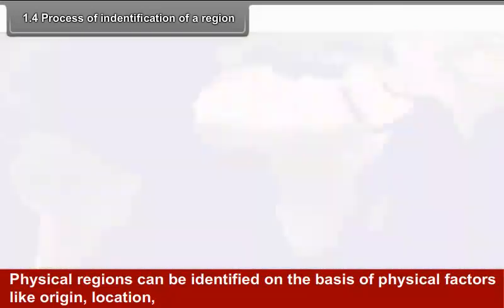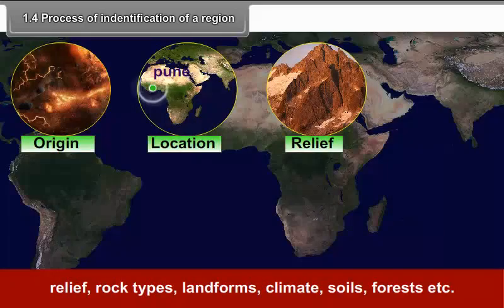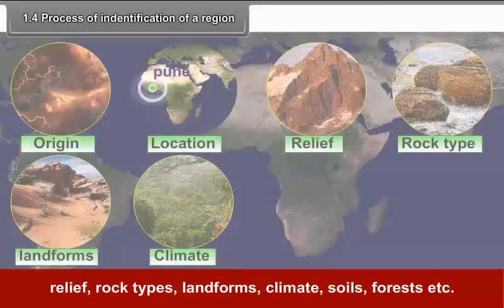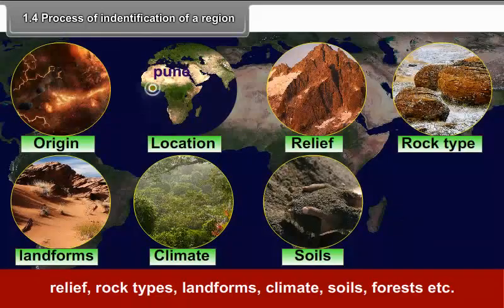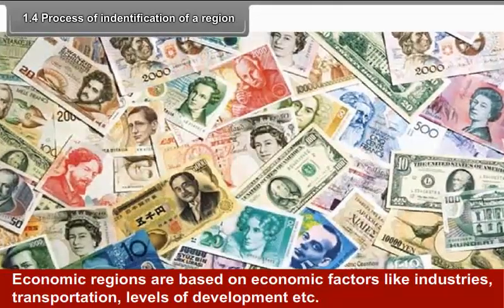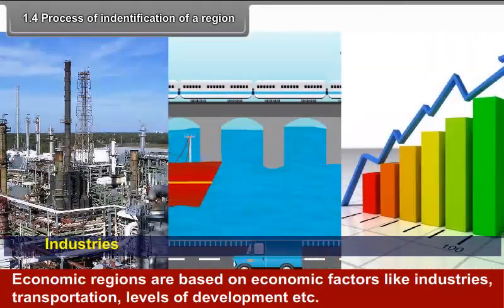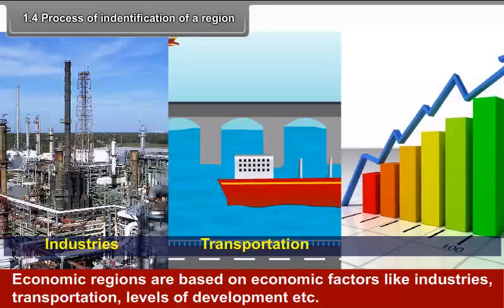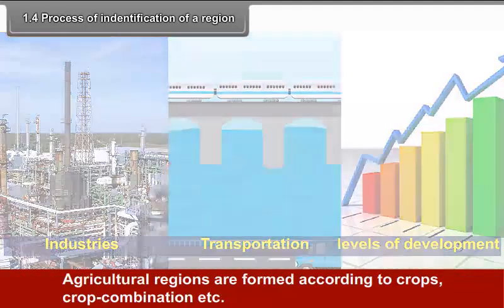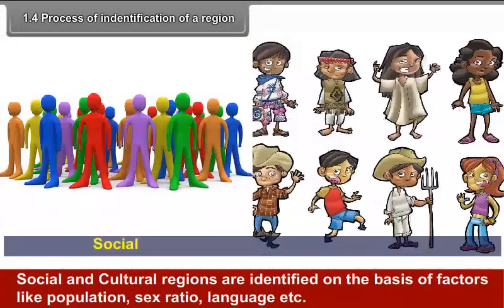They can also be identified on the basis of one or multiple factors. Physical regions can be identified on the basis of physical factors like origin, location, relief, rock type, landforms, climate, soils, forest, etc. Economic regions are based on economic factors like industries, transportation, levels of development, etc.